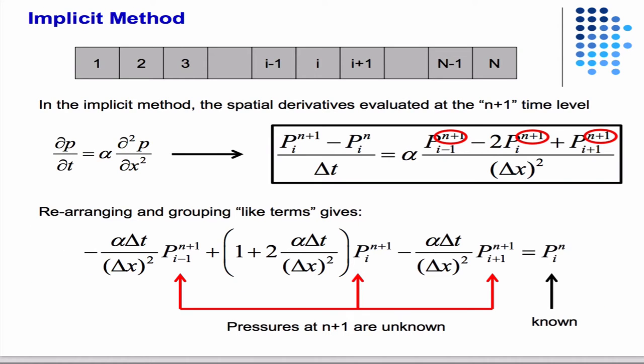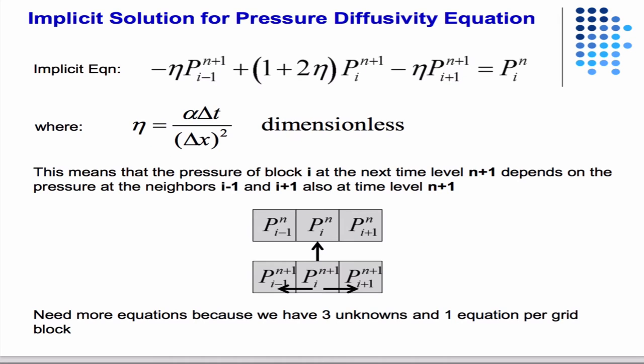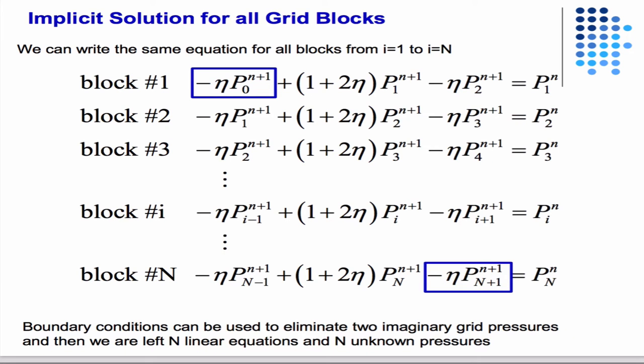The implicit method, we put the N plus ones in and rearrange the equation like this. Now they're coupled in space in the sense that the N plus ones all appear here. You need to know all of them, or you need to solve for all of them simultaneously. You have to solve a linear system of equations.